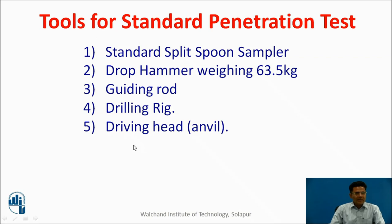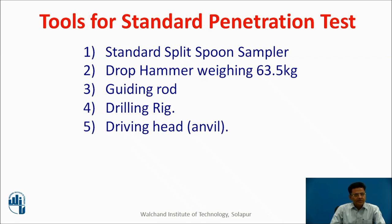The tools for SPT include: the standard split spoon sampler, a drop hammer of weight 63.5 kg, the guiding rod, drilling rig, and driving head, which is also called the anvil.